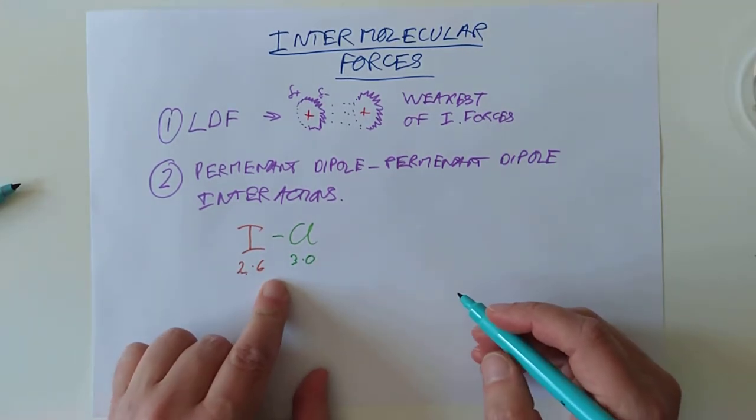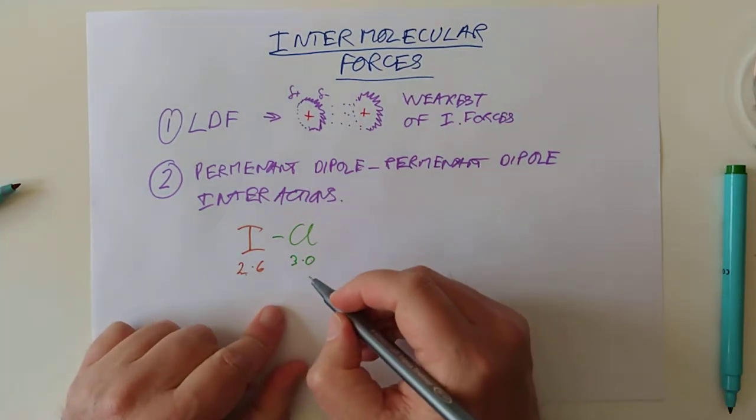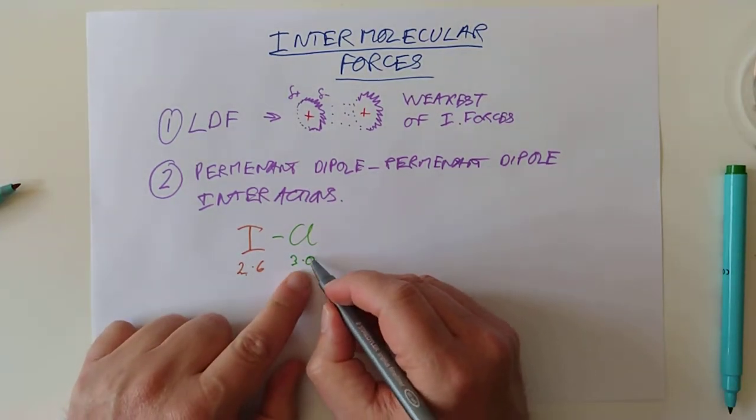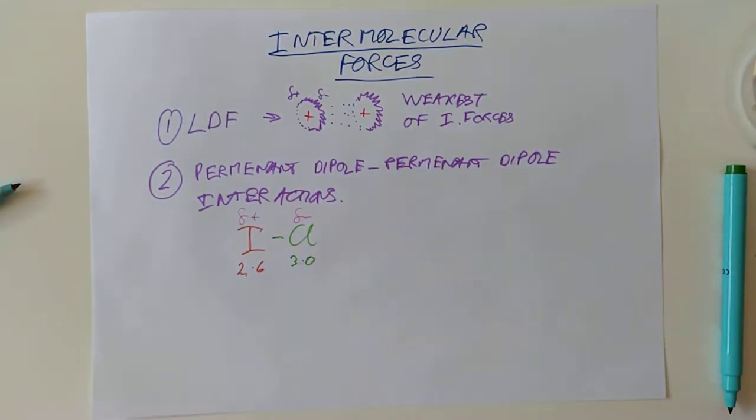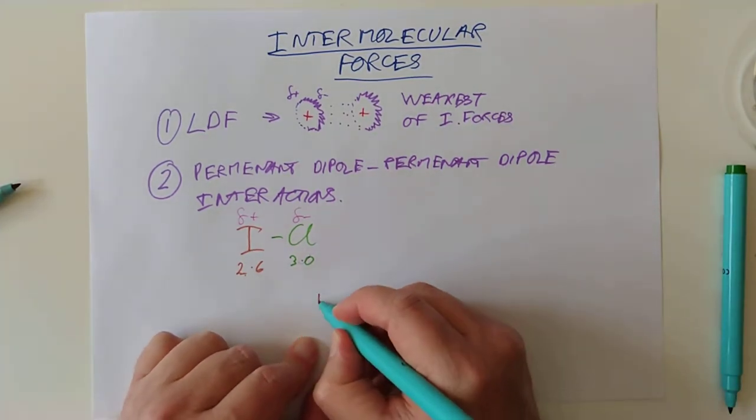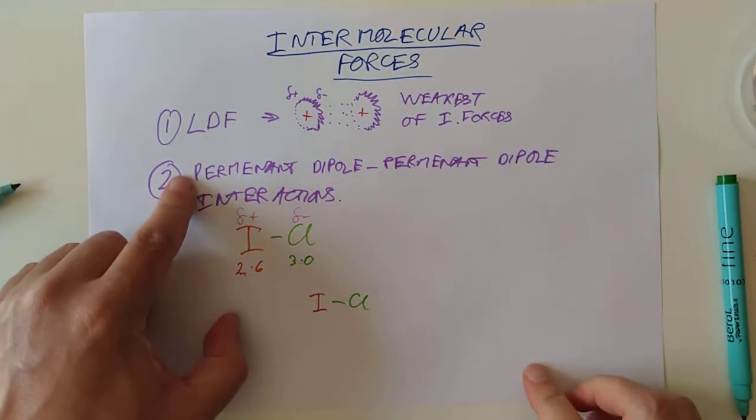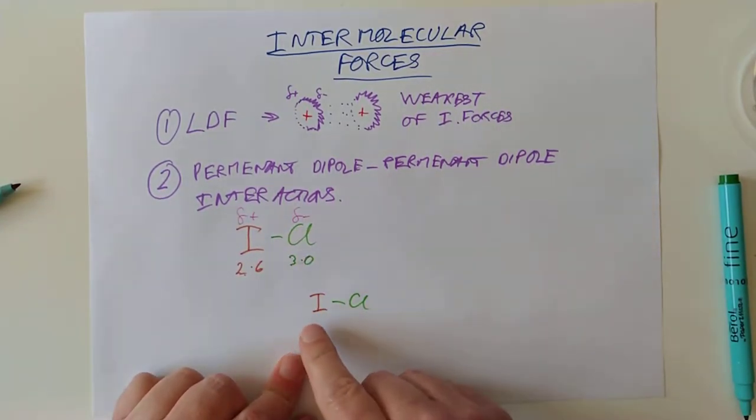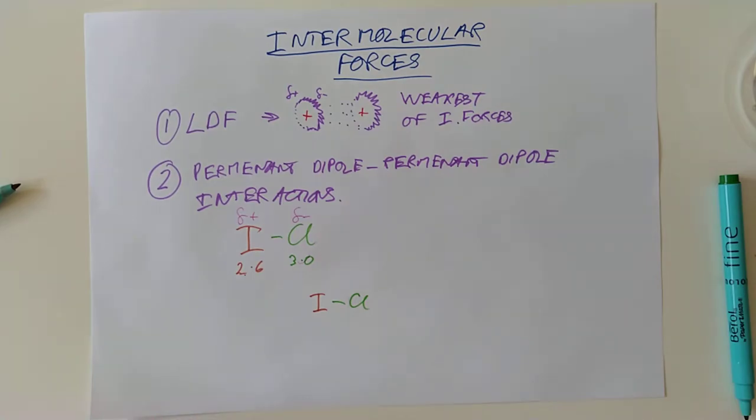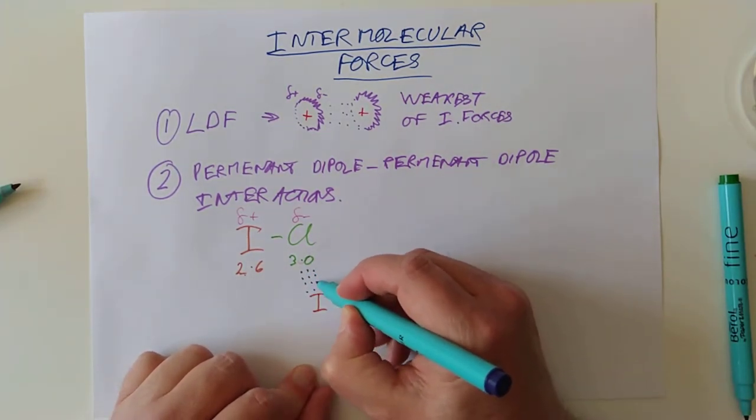So 2.6 for the electronegativity of that and 3 for the electronegativity of chlorine. So, you've got a decent delta. And this is going to be delta... Hopefully you can work it out. This is the most pull. Remember, this is Chris Hemsworth. So this is going to be the delta minus. This is going to be the delta plus. Which means any neighbouring atom of ICL is going to be attracted to this. So if we do another ICL here, you're going to get these permanent dipole interactions between the delta minus end and the delta plus end. So permanent dipole, permanent dipole interactions will occur here.